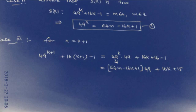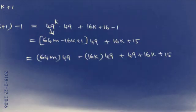From equation 1, we know 49^k = 64m - 16k + 1. Substituting this value: (64m - 16k + 1) × 49 + 16k + 15, which equals 64m × 49 - 16k × 49 + 49 + 16k + 15.